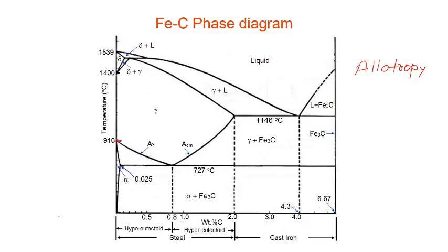We have seen pure iron in different forms. Now we will add carbon in different amounts and see what phases can exist in this iron-carbon diagram. If you look at the ferrite phase itself, you can see it terminates at about 0.025% carbon. This tells you that alpha iron has limited solubility for carbon — it can only dissolve a maximum of 0.025% carbon, and that too at some elevated temperature. At room temperature it is really low, almost close to pure iron.